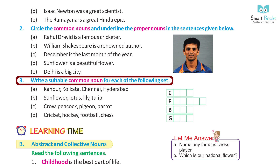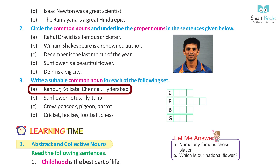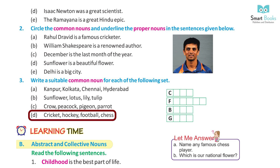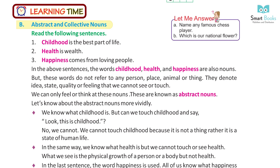Question 3: Write a suitable common noun for each of the following set. A) Kanpur, Kolkata, Chennai, Hyderabad — Answer: City. B) Sunflowers, Lotus, Lily, Tulip — Answer: Flowers. C) Crow, Peacock, Pigeon, Parrot — Answer: Birds. D) Cricket, Hockey, Football, Chess — Answer: Games.